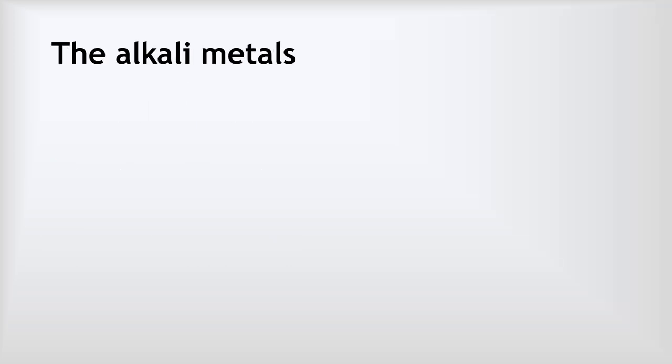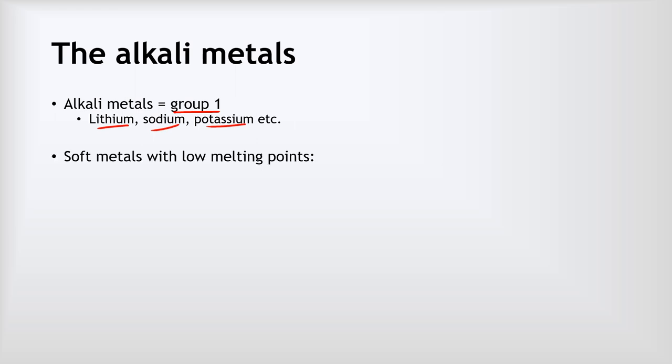Okay, so the alkali metals, these are the metals in group one of the periodic table and the first three of them are lithium, sodium, and potassium. The alkali metals are all soft metals with low melting points, and by soft they really are very soft, so you can literally cut them with a knife without much difficulty at all.